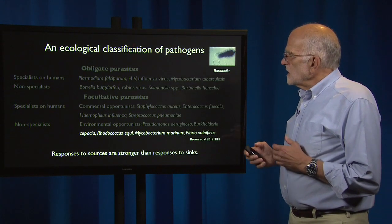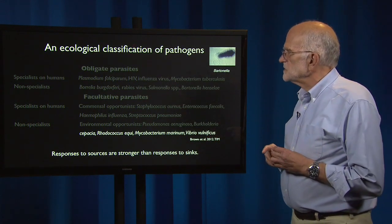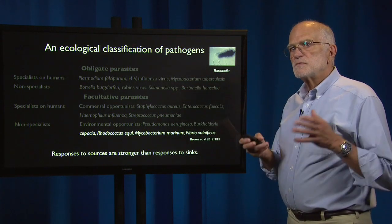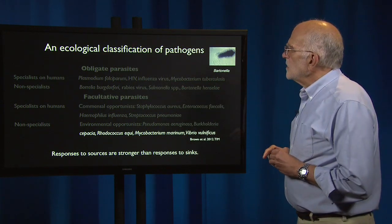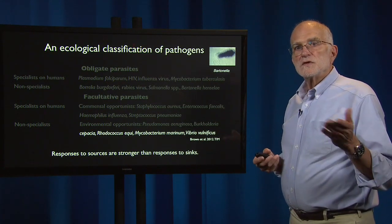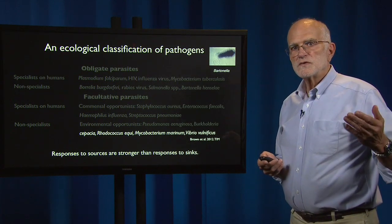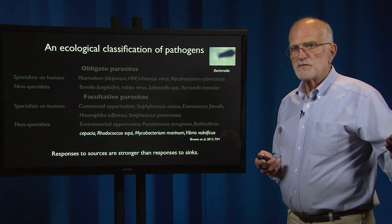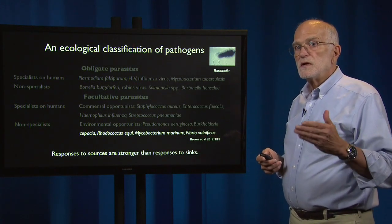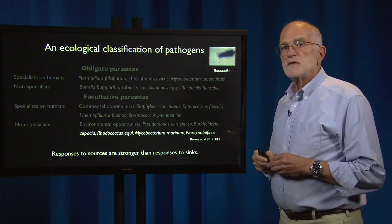A key principle here is that a response to a source is much stronger than a response to a sink. An obligate parasite is living in a source and responds strongly to it, whereas a facultative parasite might experience a human host as a sink — a place where it is not going to reproduce or disperse well. Over evolutionary time, its interactions with humans will not be as finely honed as those of an obligate parasite.